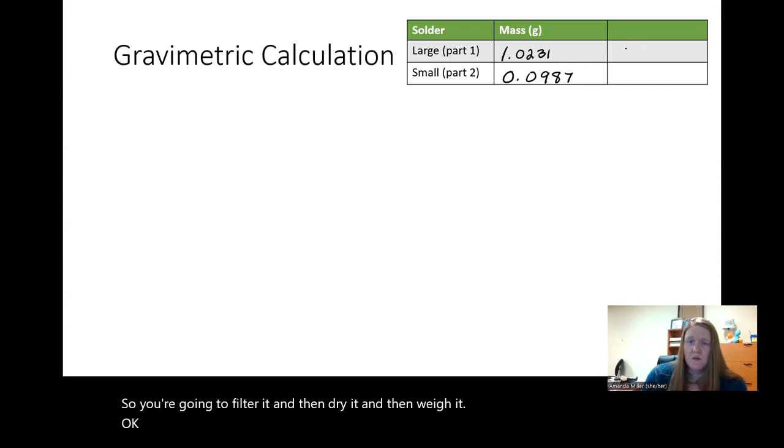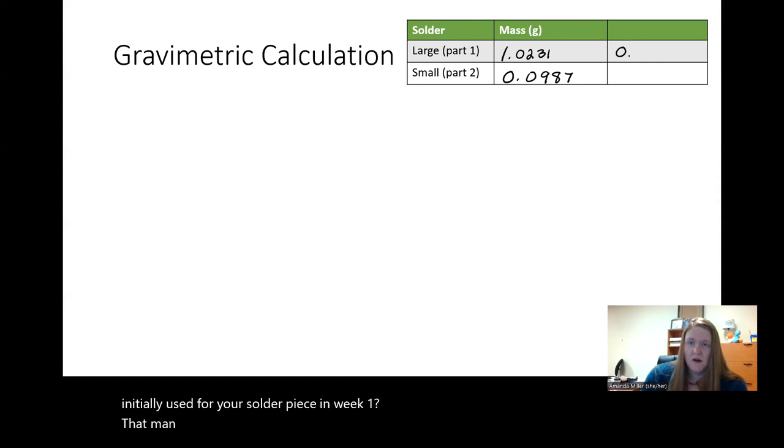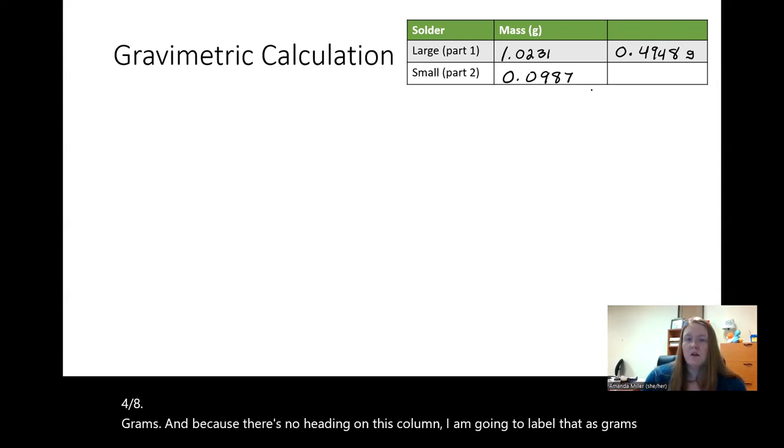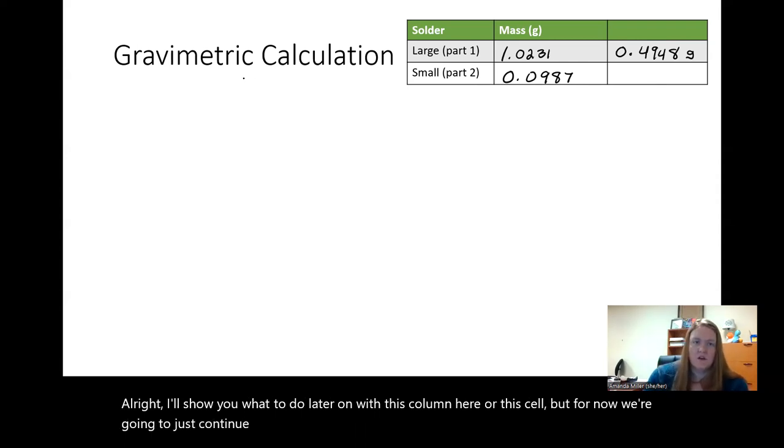So it's going to be another mass. You're going to weigh it on the same balance that you initially used for your solder piece in week one. That mass should be quite a bit smaller. In my data, just as an example, I'm going to say that I measured 0.4948 grams. And because there's no heading on this column, I am going to label that as grams. I'll show you what to do later on with this column here, or this cell. But for now, we're going to just continue and do our calculation for gravimetric.